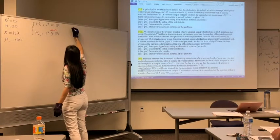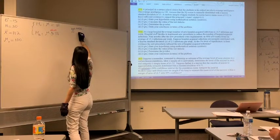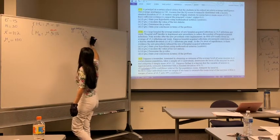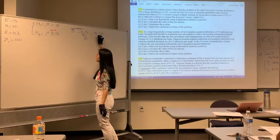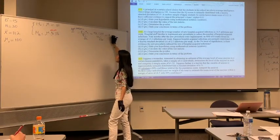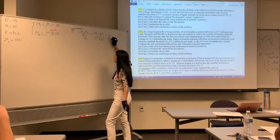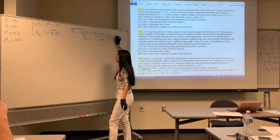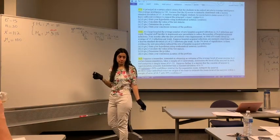The next step is to find the z-test statistic, which is x-bar minus mu0 divided by sigma over square root of n. X-bar is 112, mu0 is 100, sigma is 15, and n is 30. So we have 12 divided by 2.744, giving us a test statistic of 4.38.